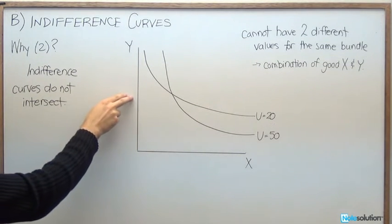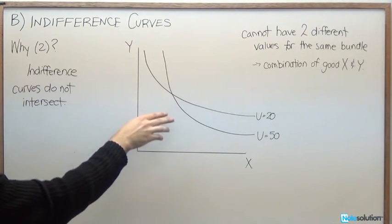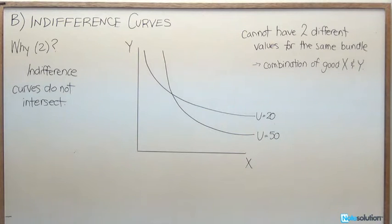If we had 3 cans of Coke and 5 cans of Pepsi, can we at the same time have a value of 20 and a value of 50? No. That combination is only going to give us one value.